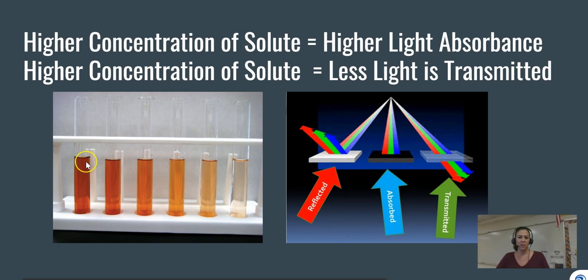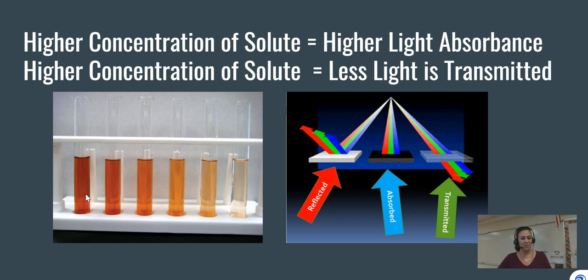Looking at the test tubes again, the highest concentration of solute in the first test tube will have the highest absorption on the spectrophotometer because light is being absorbed rather than passing through. That high concentration also has low transmittance. A spectrophotometer can measure two things: absorption and transmission, and we're going to collect data on how much light is absorbed.